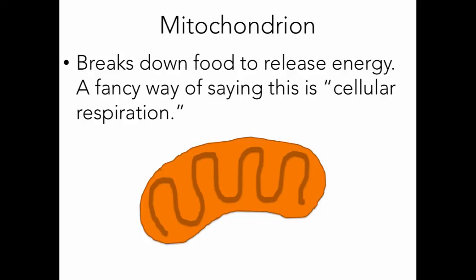Next we have the mitochondrion — the plural is mitochondria. The mitochondrion breaks down food to release energy; it takes food, breaks it into smaller pieces, and releases energy from it. A fancy way of saying this is cellular respiration. Your mitochondrion looks kind of like a bean with squiggles inside, almost in the shape of an M — you can think 'M for mitochondrion.'